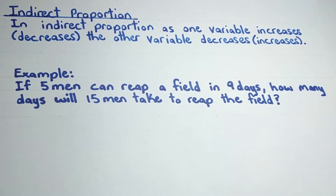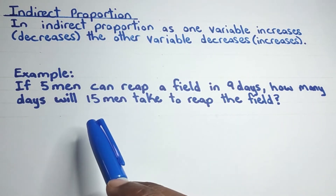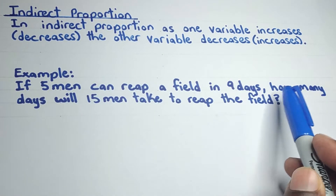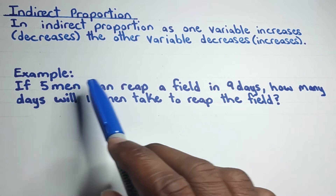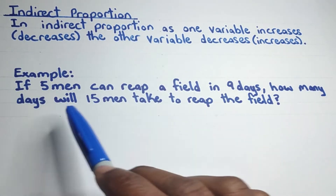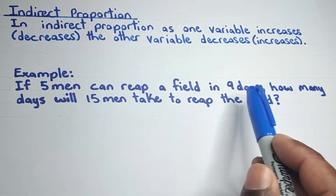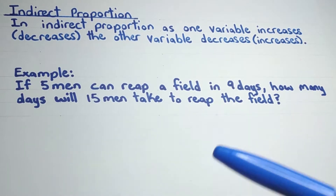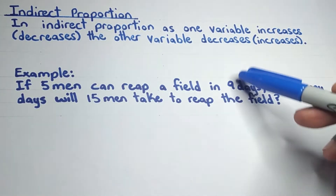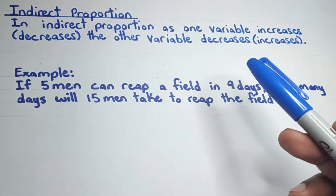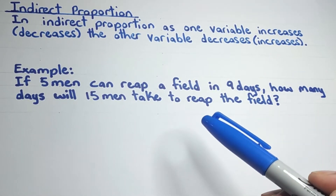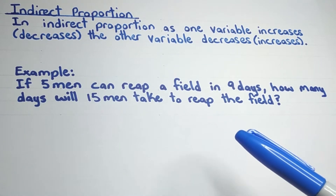To give you a better understanding, we'll look at a worded problem. If five men can reap a field in nine days, how many days will 15 men take to reap the field? Think about it — if five men can reap the field in nine days, then 15 men should take fewer days. If the number of men increases, we expect the number of days to decrease — that's what makes it an indirect proportional problem.